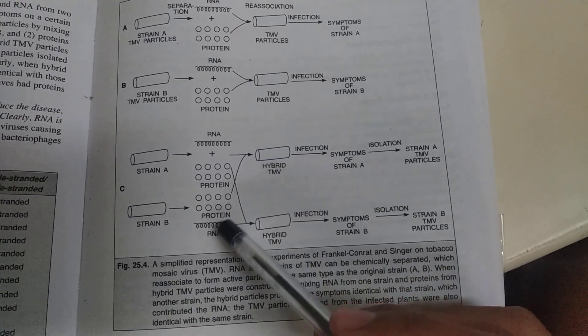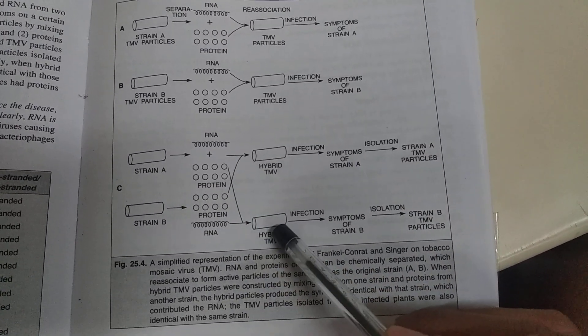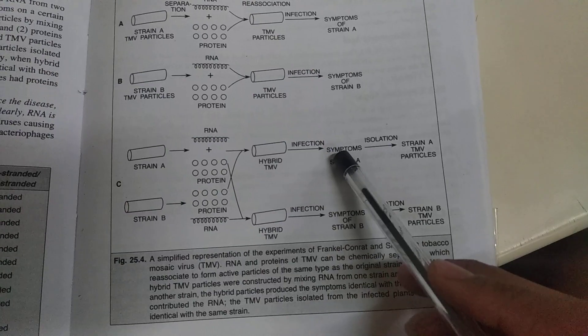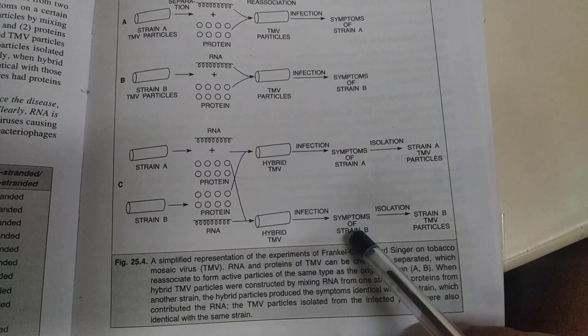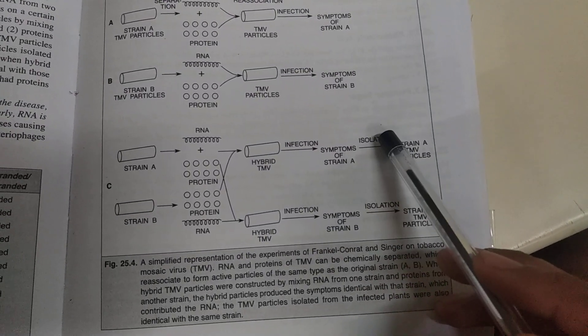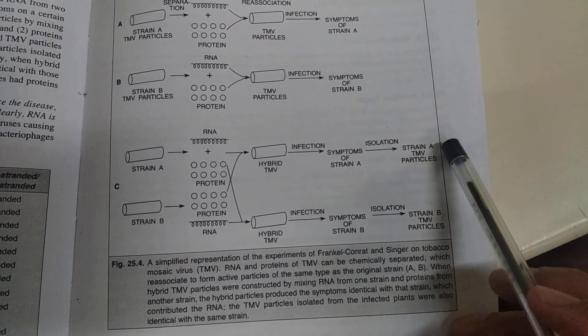They used interchanged proteins and got infection with symptom A in the first case and symptom B in the second case. They isolated both conditions and got strain A TMV particles in the first case and strain B TMV particles in the second case.